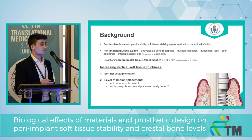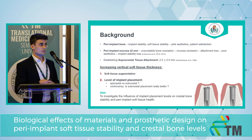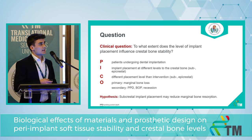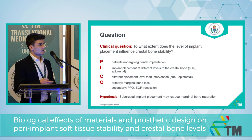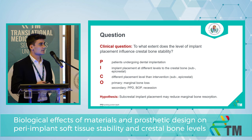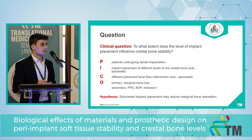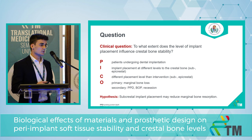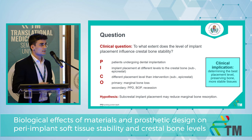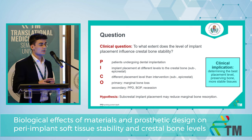Our aim is to investigate the influence of different implant placement levels on peri-implant tissues. Our question is: to what extent does the level of implant placement influence crestal bone stability? The intervention and comparator are the different placement levels, and for outcomes we will investigate hard and soft tissue parameters. Our hypothesis is that subcrestal implant placement may reduce marginal bone resorption, which would determine the best placement level, preserve more bone, result in more stable tissues, and lead to higher patient satisfaction.